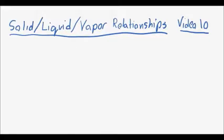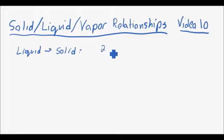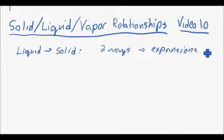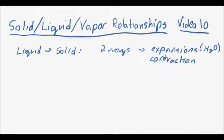Hello everyone and welcome to the 10th video in the thermodynamics video series. Today I'm going to be discussing the solid-liquid-vapor relationships, specifically showing the pressure versus specific volume plots. In these plots I have to identify how solids and liquids behave in two different ways — when a liquid turns into a solid, two things can happen: the molecules can expand, as with H2O water, or you can have contraction.